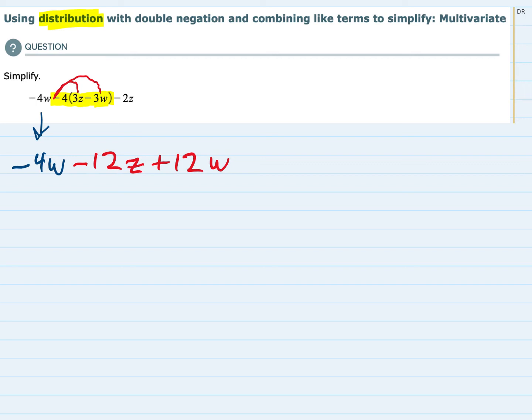And then we still have this minus 2Z behind, so I'm just going to bring that down to make sure that I don't forget it. At this point, we have done the distribution, but the second part of simplifying this is to combine like terms.